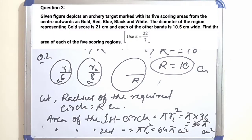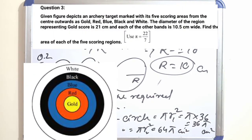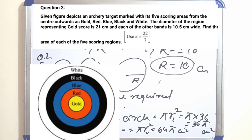Question number 3: The given figure depicts an archery target marked with five scoring areas from the center outward as gold, red, blue, black, and white. The diameter of the region representing gold is 21 cm, and each of the other bands is 10.5 cm wide. Find the area of each of the five scoring regions.